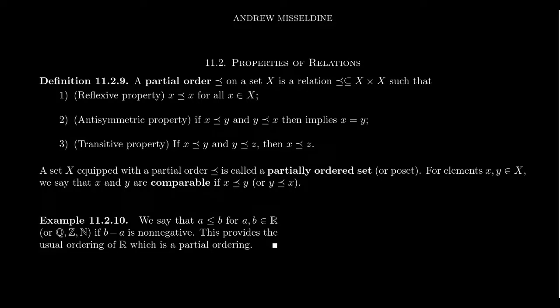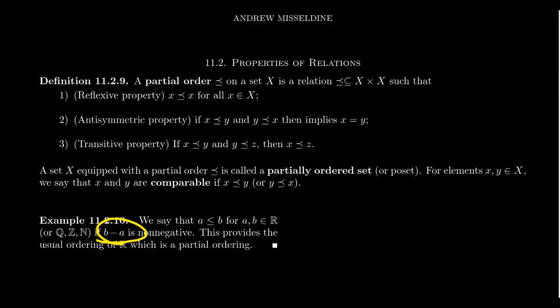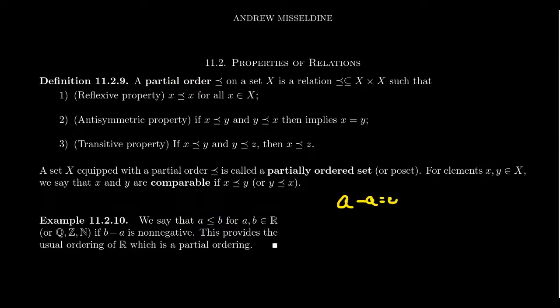The canonical example of a partial order is the set of real numbers. If you take two elements A and B — they could be positive, negative, zero, rational, or irrational — we say A is less than or equal to B if B minus A is a non-negative number. That's what it means for A ≤ B: when you take the difference B minus A, you don't get something negative. If A equals B, then B minus A equals zero, which is fine — we want this to be reflexive. If you take any number A, A minus A equals zero, which is not negative, so A ≤ A. It satisfies the reflexive property.